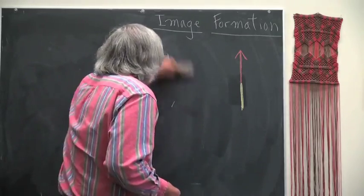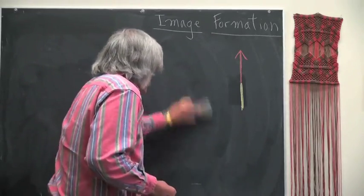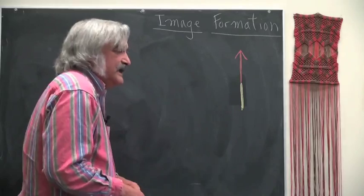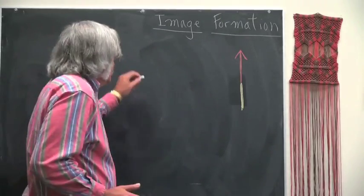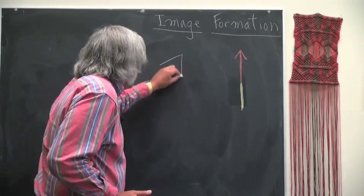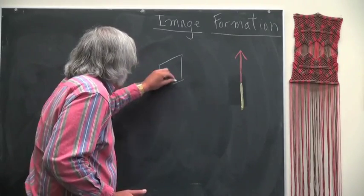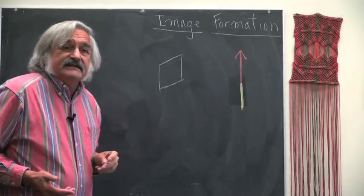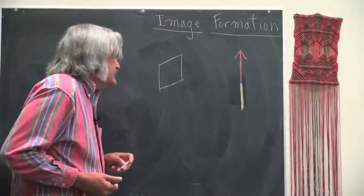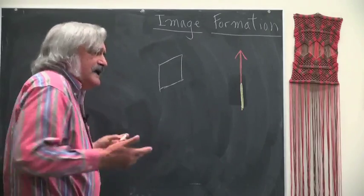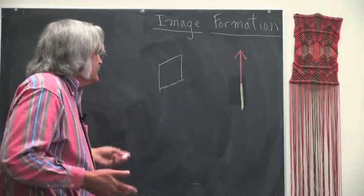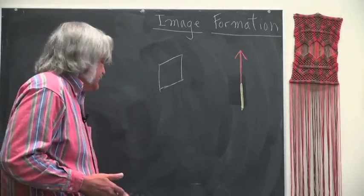So we'll stick with an arrow and we'll imagine that we don't have any lens at all and we have just some sort of piece of film or some sort of digital detector nearby this arrow. And we're going to take a picture of this arrow using our digital detector.